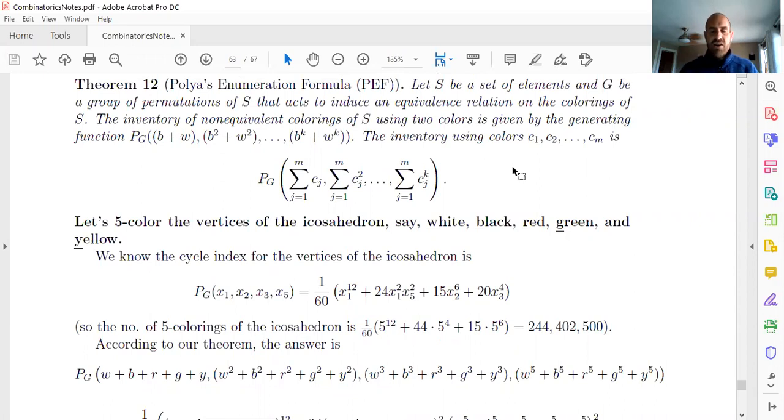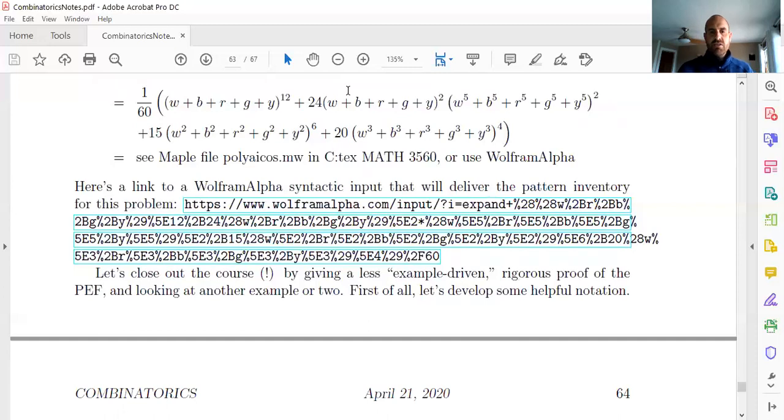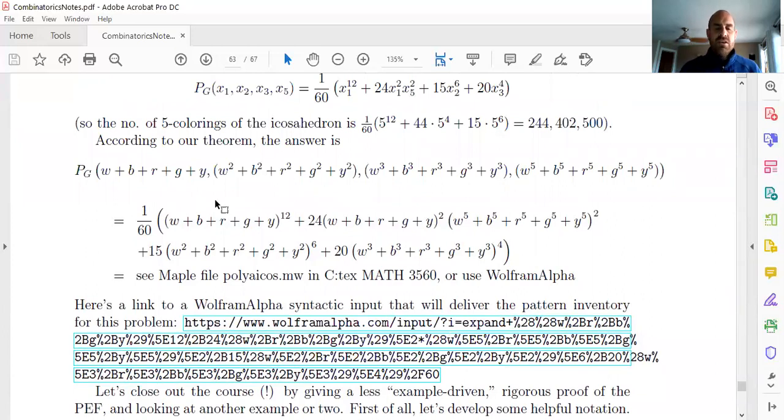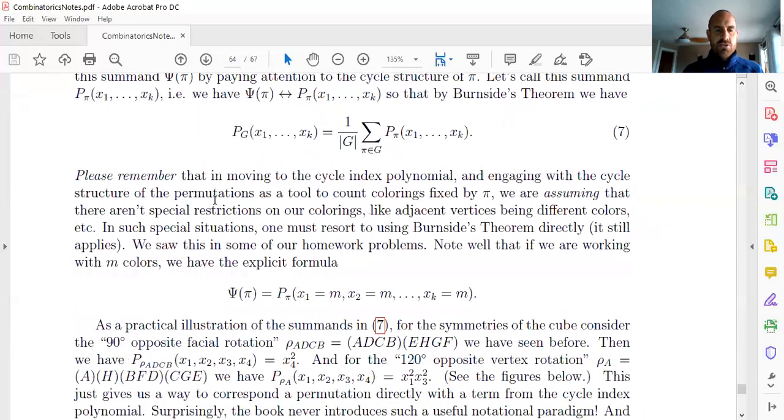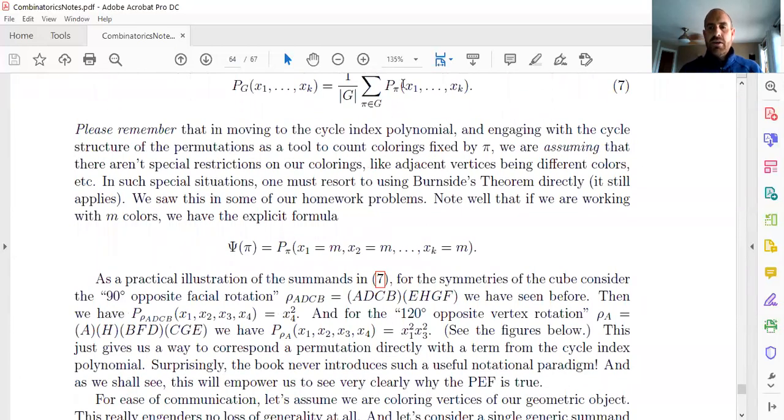Last time I mentioned, we're doing the poly enumeration formula. Why it is you can replace Xi with the sum of variables C1 through CM that represent the colors raised to the i power. And somehow that gives a pattern inventory. And I mentioned that I was going to paste this link to a Wolfram Alpha expansion of this icosahedron version of it with five colors. But what I wanted to do, I mentioned we invented these little polynomials that were kind of like a cycle index polynomial for an individual permutation.